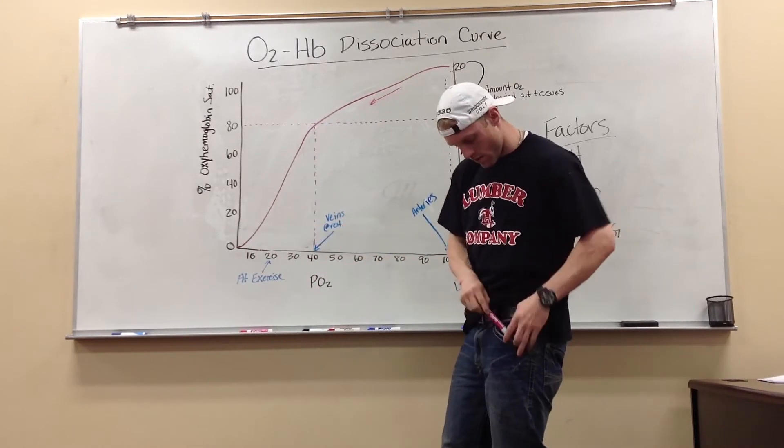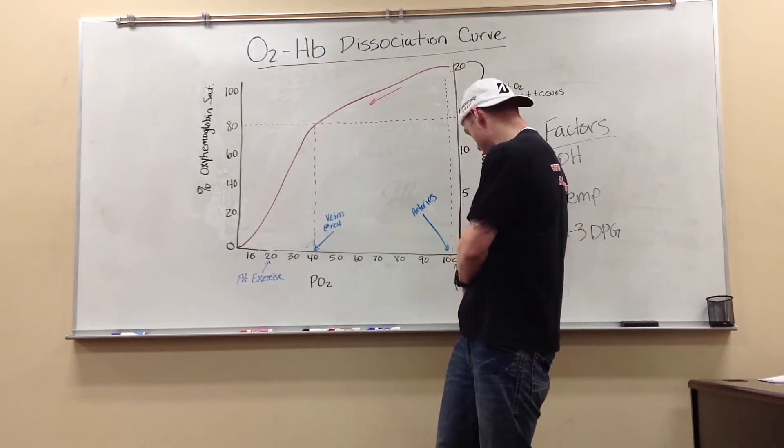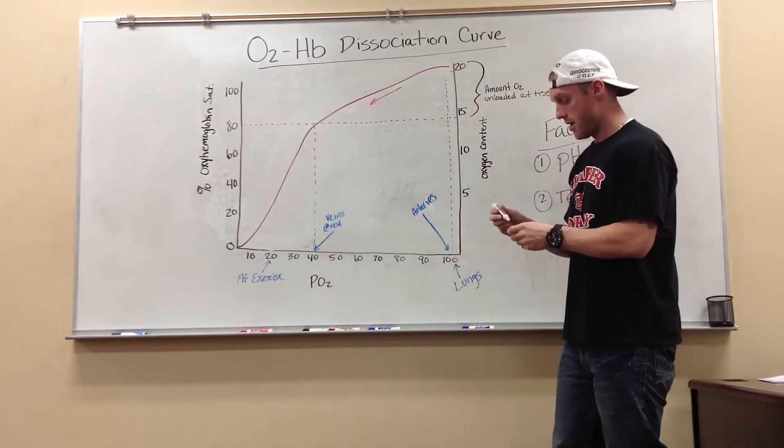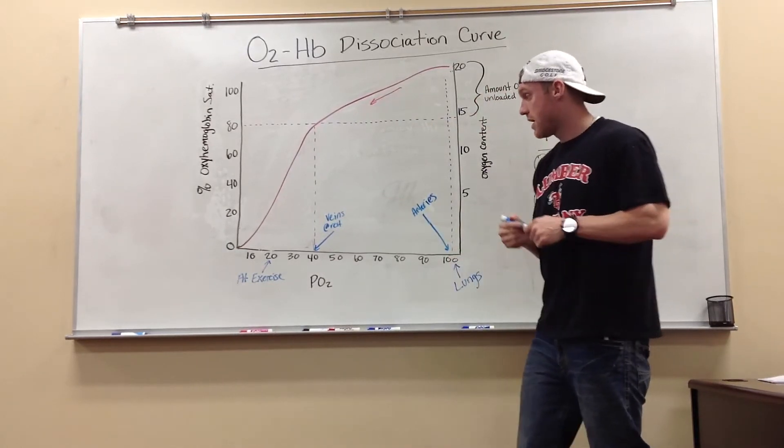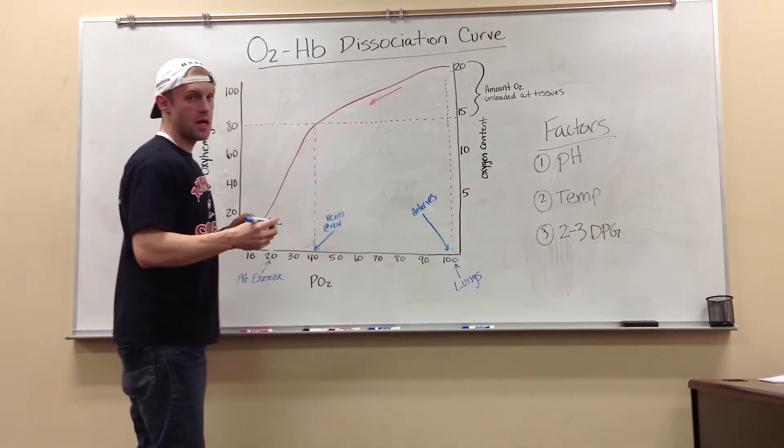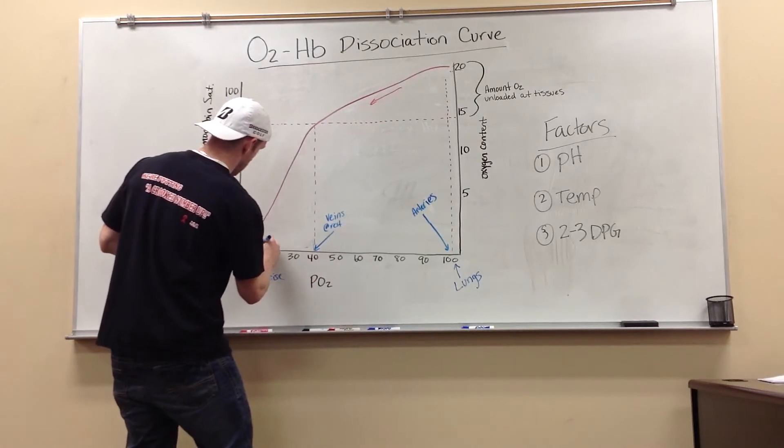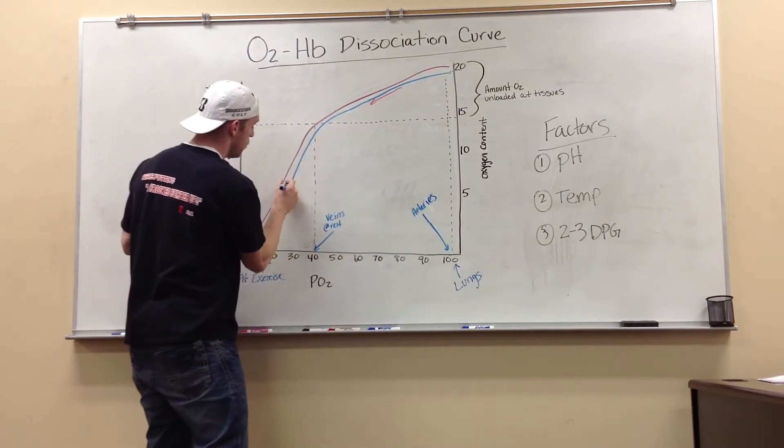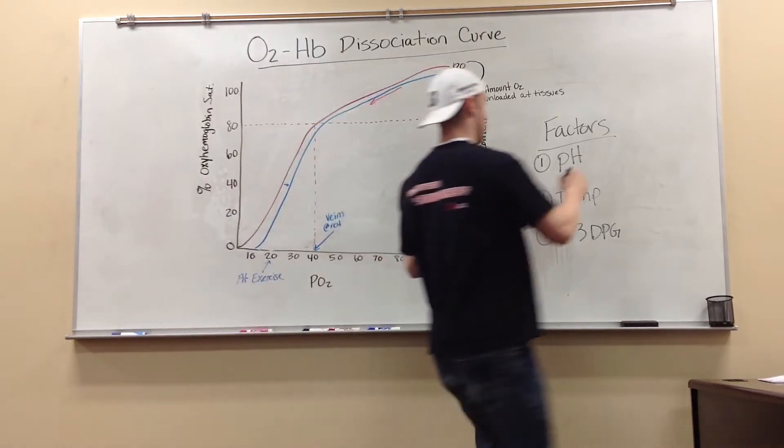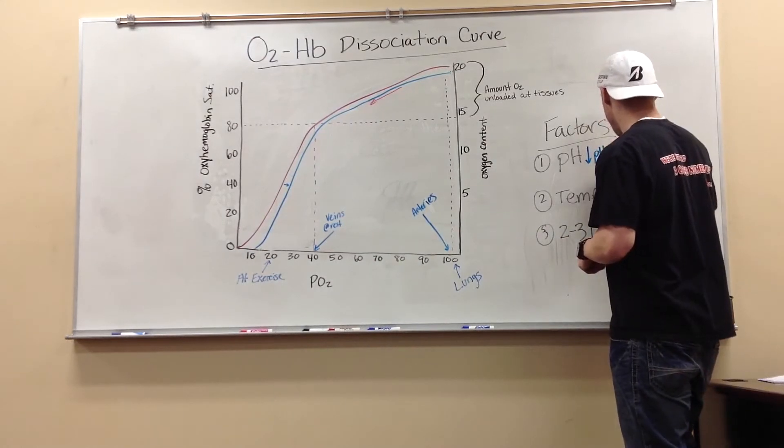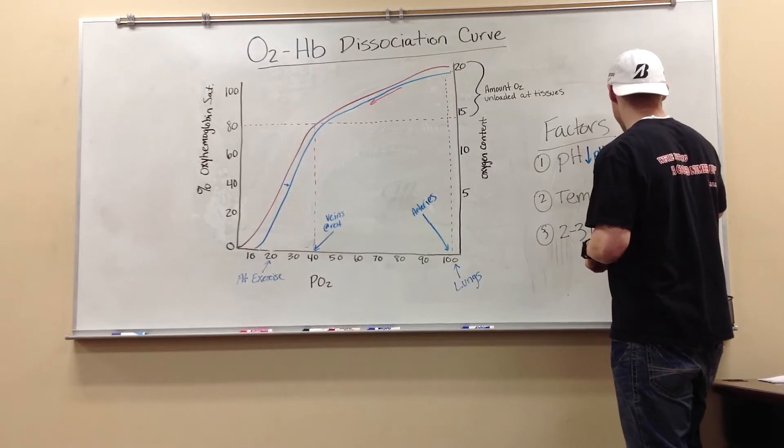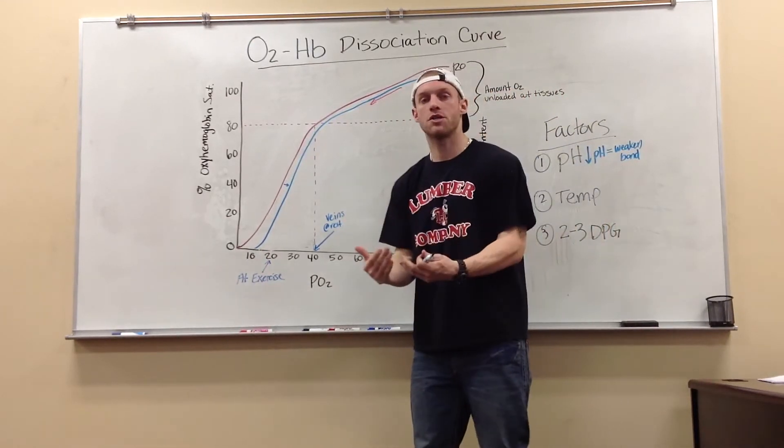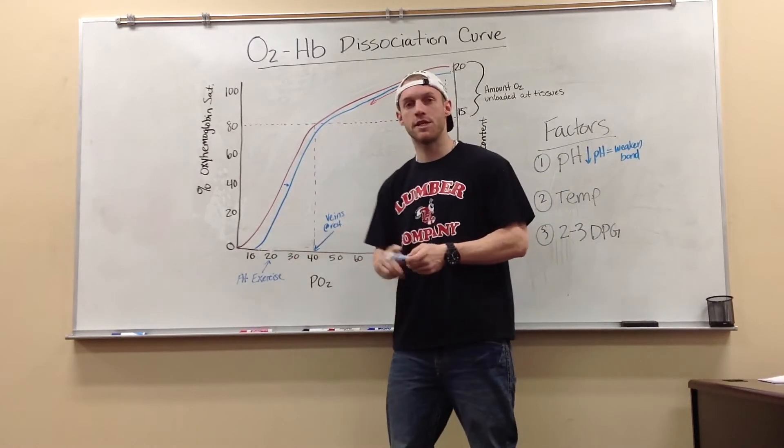So I'm going to bring in pH. So pH can affect our affinity between oxygen and hemoglobin two ways. A decrease in our pH, so I'm moving the line to the right, a decrease in pH is going to weaken the bond between oxygen and hemoglobin, which is going to make oxygen be unloaded at the tissues easier.